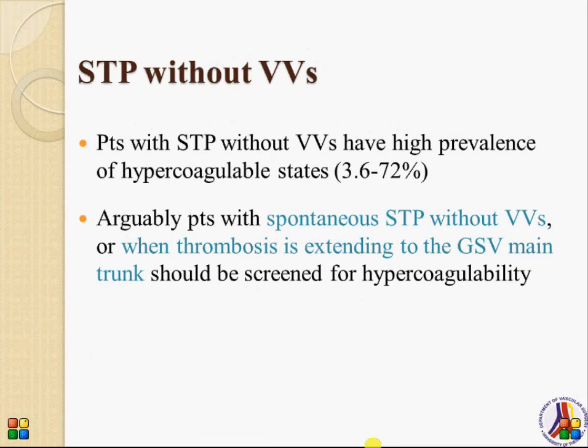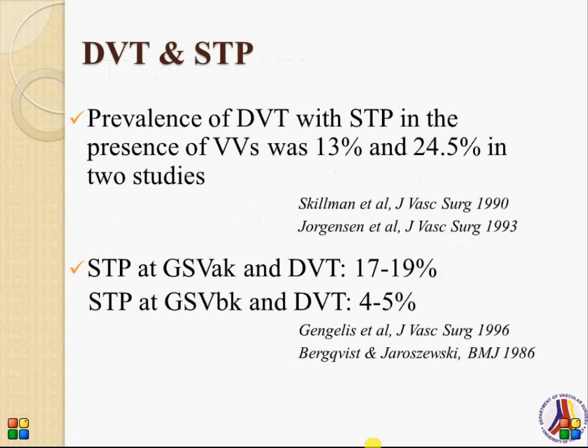The prevalence of this association has been published in a wide range, from 33.6% to 72%. Arguably, a spontaneous superficial thrombophlebitis without varicose veins, or when thrombosis is extended to the great saphenous vein main trunk, means these patients should be screened for hypercoagulability.